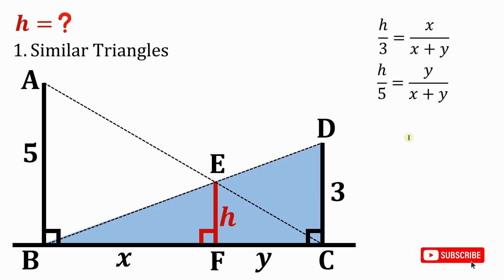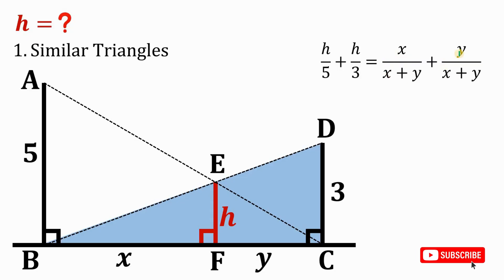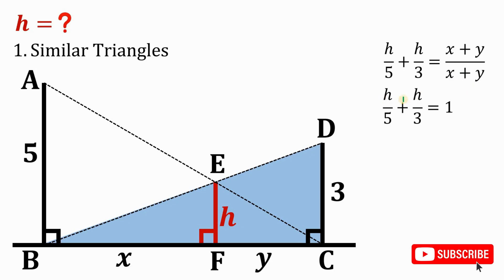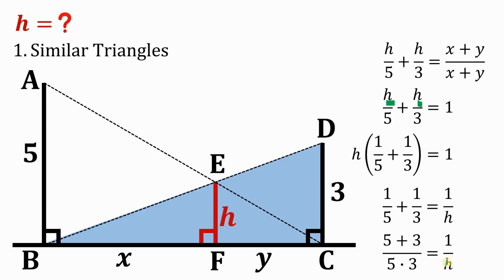Now let's focus on these two results and add those equations. We get H over 5 plus H over 3 equals X over (X plus Y) plus Y over (X plus Y). The right-hand side simplifies to (X plus Y) over (X plus Y), which equals 1. Factoring out H on the left side gives H times (1 over 5 plus 1 over 3) equals 1. Dividing both sides by H: 1 over 5 plus 1 over 3 equals 1 over H.